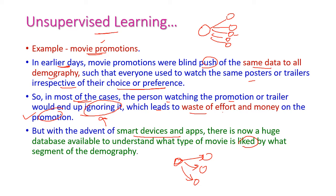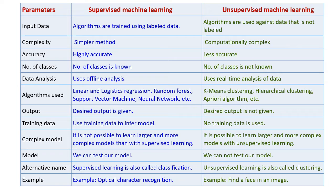Now let us see a detailed comparison of supervised learning and unsupervised learning with respect to given parameters. When we come to input data, supervised machine learning uses labeled data, but unsupervised learning uses unlabeled data. When we come to complexity, supervised learning is very simple, but unsupervised learning is somewhat complicated when compared to supervised learning.